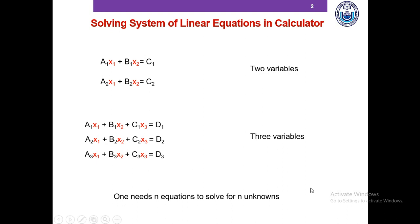So what is a system of linear equations in the first place? A system of linear equations with two variables takes this form: a1*x1 plus b1*x2 equals c1, and a2*x1 plus b2*x2 equals c2. Here a1, b1, c1 and a2, b2, c2 are constants, and x1 and x2 are variables. In order to solve a system of linear equations with n variables, you need n equations. Here we have two variables, which means you need two equations.